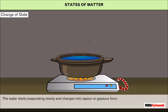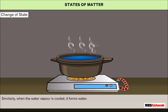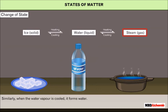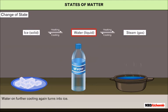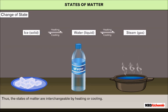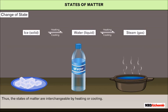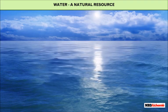Now heat the water — the water starts evaporating slowly and changes into vapor or gaseous form. Similarly, when the water vapor is cooled, it forms water. Water on further cooling again turns into ice. Thus, the states of matter are interchangeable by heating or cooling.